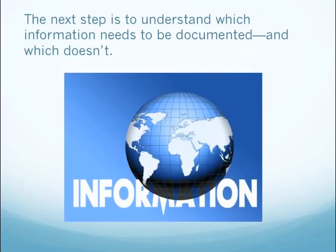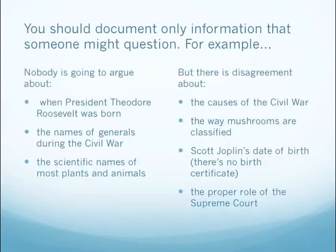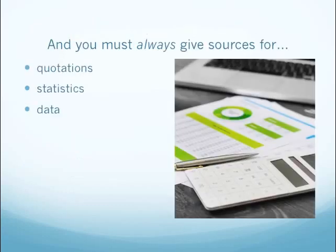The next step is to understand which information needs to be documented and which doesn't. You should document only information that someone might question. For example, nobody is going to argue about when President Theodore Roosevelt was born, the names of generals during the Civil War, or the scientific names of most plants and animals. But there's disagreement about the causes of the Civil War, the way mushrooms are classified, Scott Joplin's date of birth — because there's no birth certificate — the proper role of the Supreme Court, and similar questions. And you must always give sources for quotations, statistics, and data.